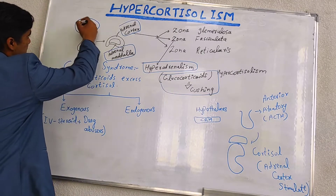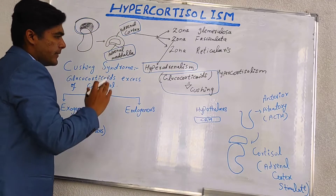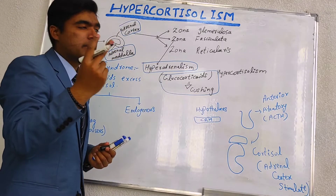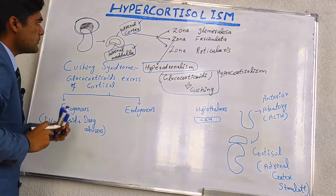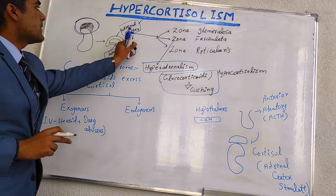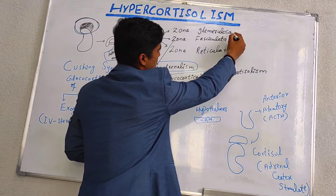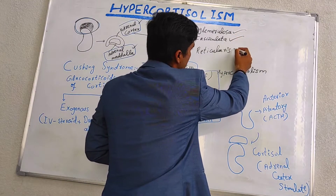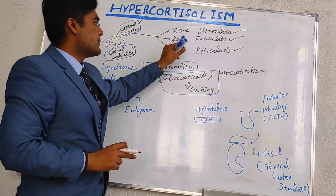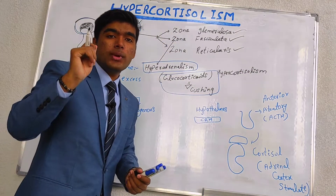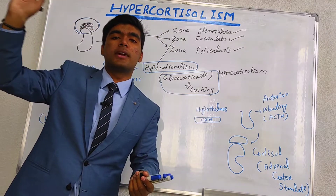On the kidneys we have the adrenal gland. When we look at its cross section, it is divided into the adrenal cortex and adrenal medulla. The adrenal cortex is further divided into three parts: zona glomerulosa, zona fasciculata, and zona reticularis. On zona fasciculata we have secretion of cortisol, which is relevant to hyperadrenalism.